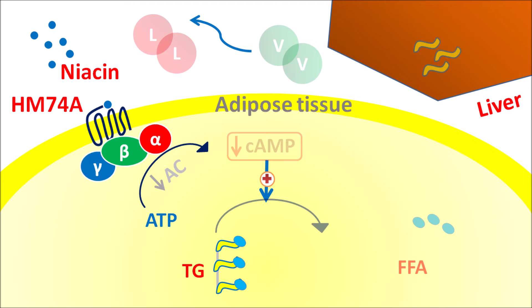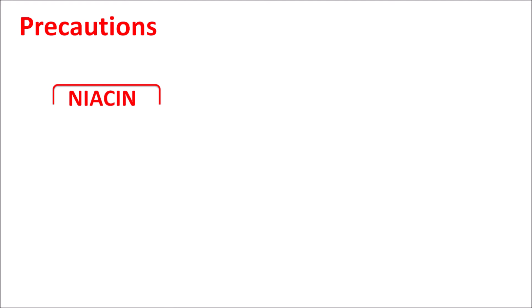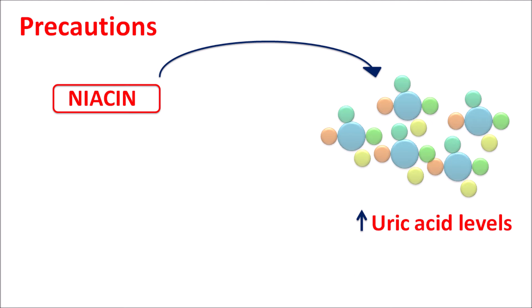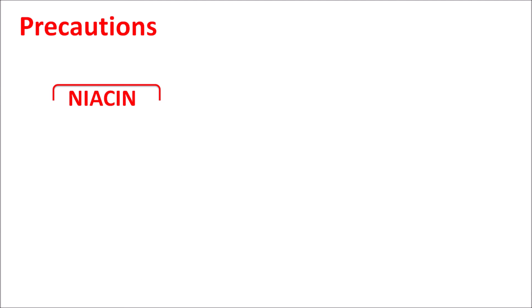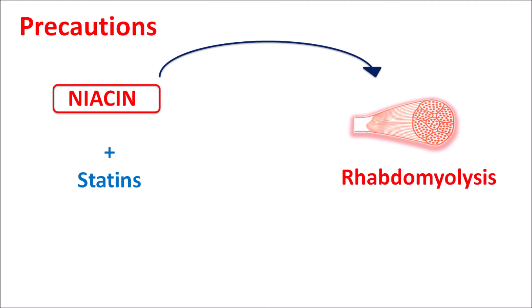This results in an overall reduction of total cholesterol levels, reducing the risk of atherosclerosis. Regarding precautions: niacin can increase uric acid levels excessively, which may increase the risk of gout precipitation. This drug should be given carefully in patients with elevated uric acid levels or at risk for gout. When combined with statins, niacin can also increase the risk of rhabdomyolysis — the dissolution of muscle fibers, which is primarily a statin-related adverse effect.